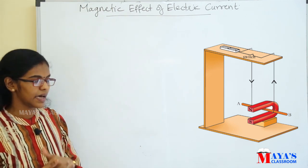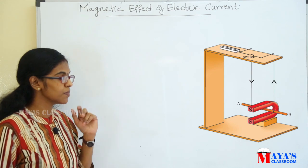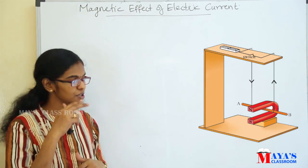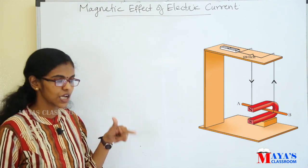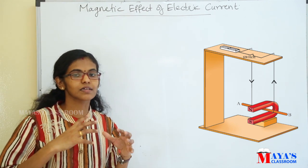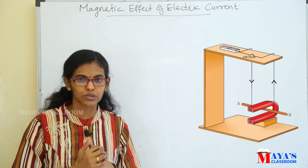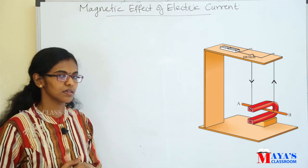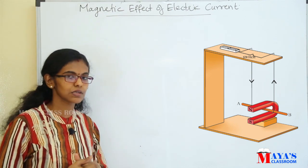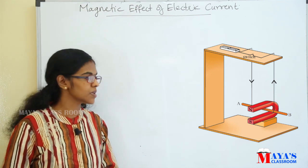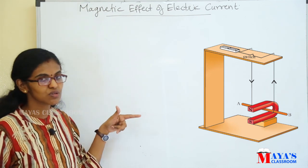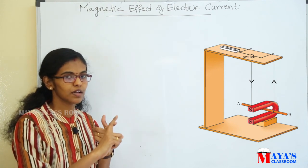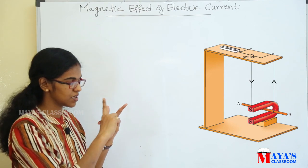We apply this rule. Here, the current direction is A to B, and the magnetic field is north to south. We have to know in which direction the force acts. When the magnetic field is represented by the four fingers of the left hand, we apply this rule — the magnetic field represents the four fingers.